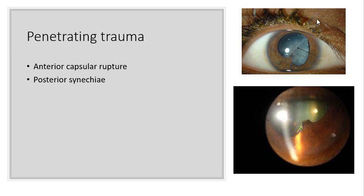Some other examples of penetrating trauma include this image here, which is anterior capsular rupture due to a slingshot hitting the eye. The patient can develop complications because the iris then gets stuck to the lens, which becomes a problem with the functioning of the iris and the pupil. The bottom image shows posterior synechia of the iris, changing its shape, and the pupil changing its shape in this particular patient. Think about the problems this patient might have if their pupil doesn't function the way it's supposed to, particularly in bright light.